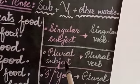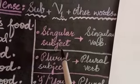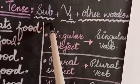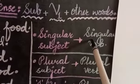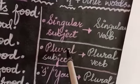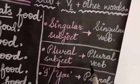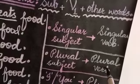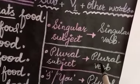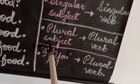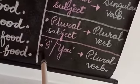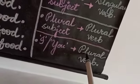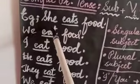When following this structure, keep three important rules in mind. Rule one: a singular subject takes a singular verb — if the doer of the action is singular, use a verb ending in 's', 'es', or 'ies'. Rule two: a plural subject takes a plural verb — if the subject is more than one, use a verb not ending in 's', 'es', or 'ies'. Rule three: if the subject is 'I' or 'you', always use a plural verb — one not ending in 's', 'es', or 'ies'.